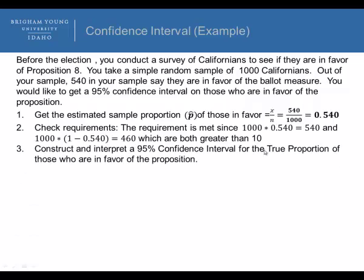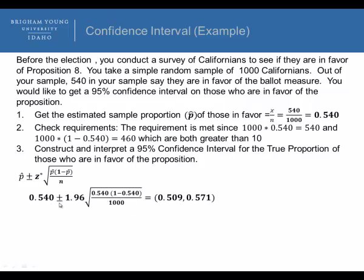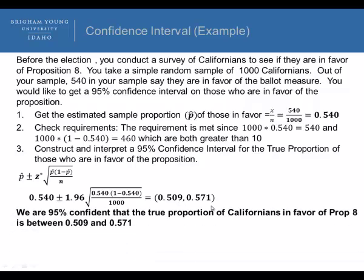The next step is construct and interpret a 95% confidence interval for the true proportion of those in favor of the proposition. The formula is p-hat plus or minus our critical value times the square root of p-hat times 1 minus p-hat divided by our sample size. Plugging in all the numbers, we would take 0.540 plus or minus 1.96 times the square root of 0.540 times 1 minus 0.540 divided by 1,000, and when we calculate the two numbers, we would get 0.509 and 0.571. We're 95% confident that the true proportion of Californians in favor of Proposition 8 is between 0.509 and 0.571.